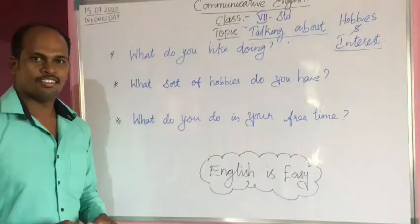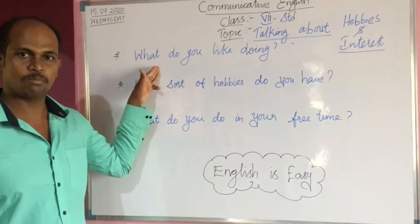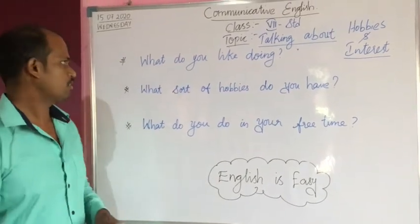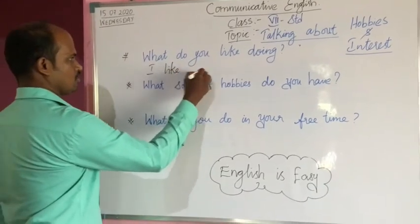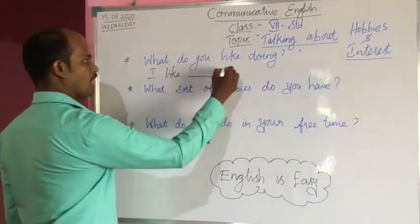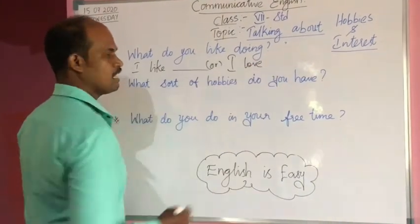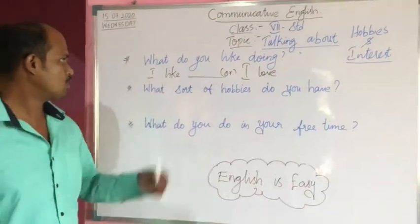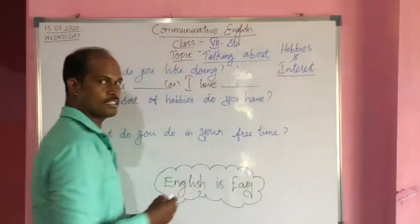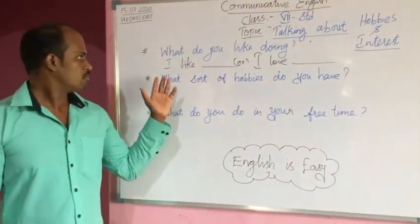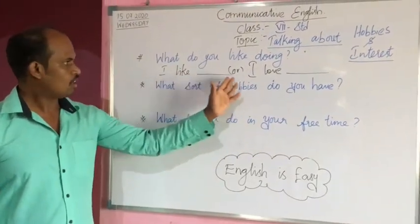Now we are going to see how to answer — or rather, how to respond to these questions. What do you like doing? I like doing something, or I love... I love to dance. I like to listen to music. I love to paint. I love to play. You can frame sentences by using 'I like' or 'I love'.